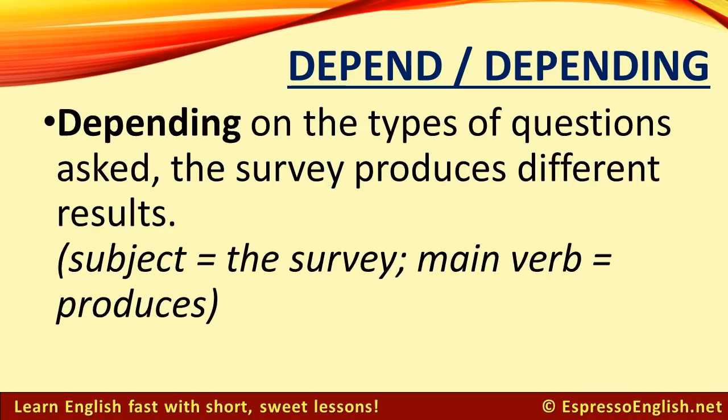You can also have dependent clauses at the beginning of a sentence. For example: Depending on the types of questions asked, the survey produces different results. In this sentence, the subject is "the survey" and the main verb is "produces."